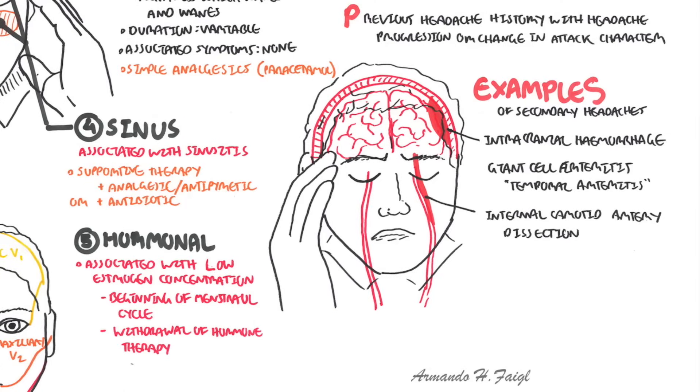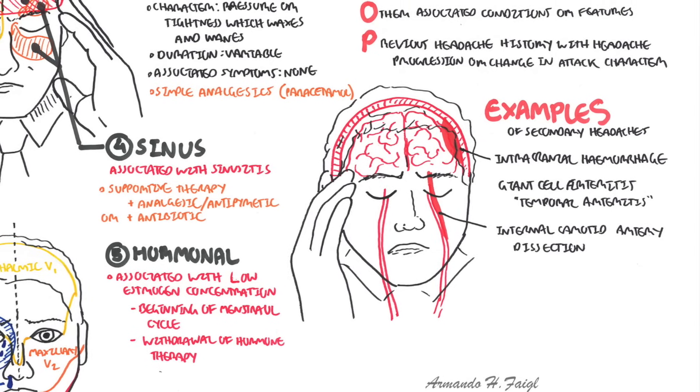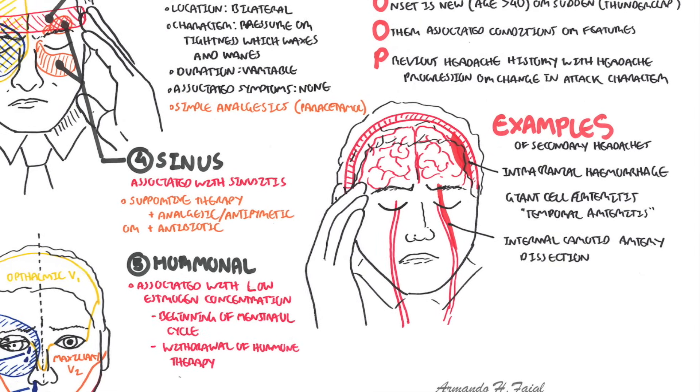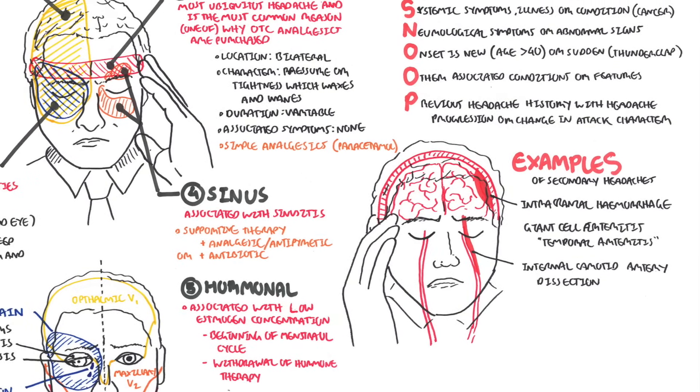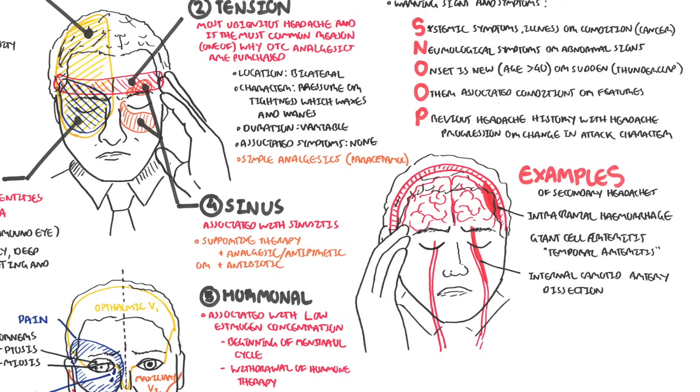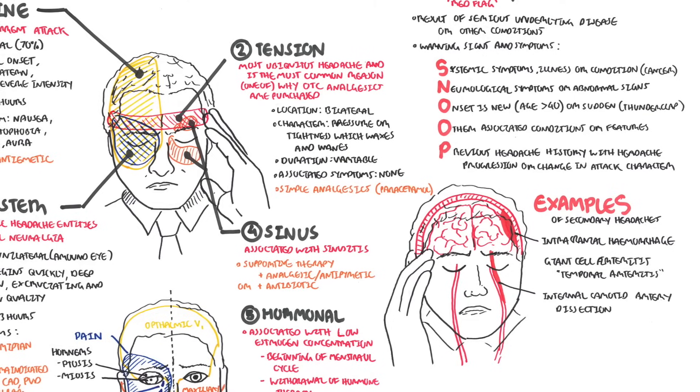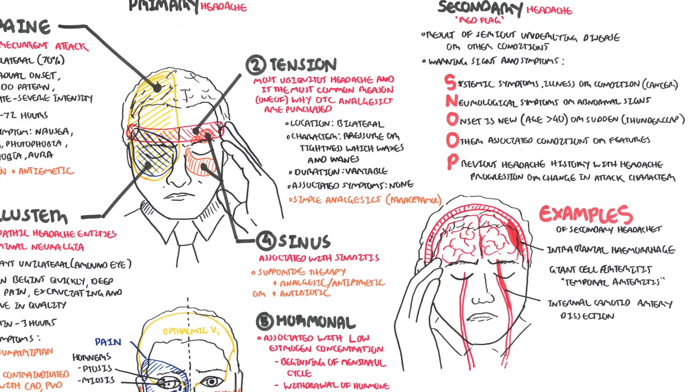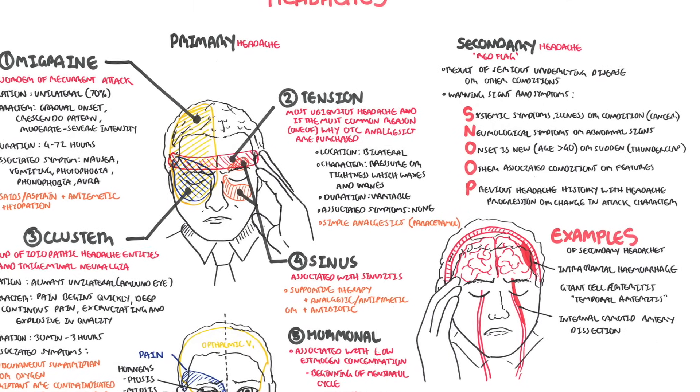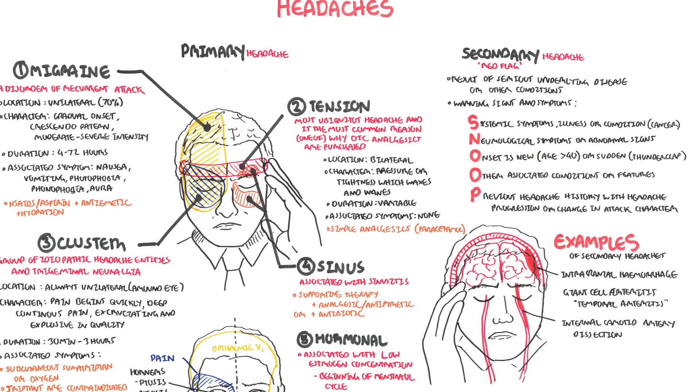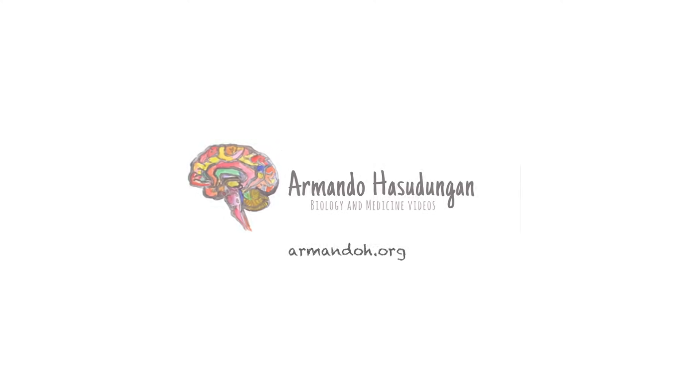In summary, we looked at headaches, which can be primary or secondary. Primary include migraine, tension, cluster, sinus, and hormonal. Secondary are your dangerous ones, and it's a result of an underlying condition that is more serious. We can pick this up with the acronym SNOOP, which helps us identify if it's more serious or not. I hope you enjoyed this video. Thank you for watching. Bye.